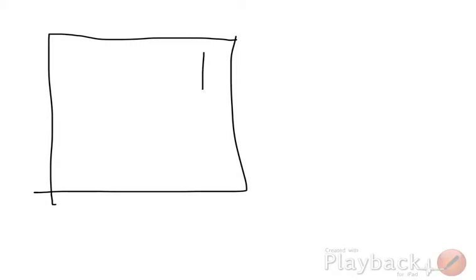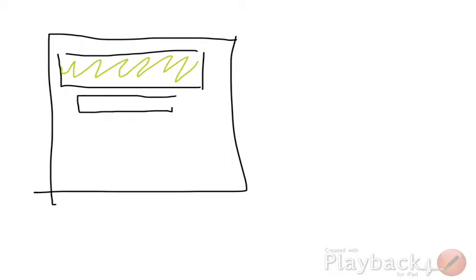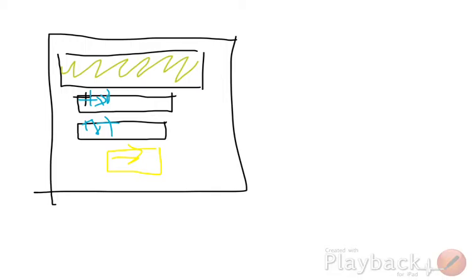So what does a page object mean? Let's say we have a login page. It has a nice header where our brand logo is, a username field and a password field — both are text fields — and also a nice button that says 'log me in'.